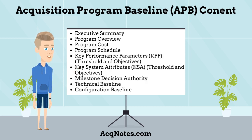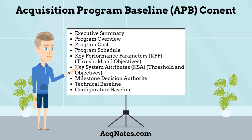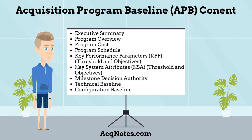What content goes into the Acquisition Program Baseline? The APB includes: an Executive Summary, Program Overview, Program Cost, Program Schedule, Key Performance Parameters with Threshold and Objectives, Key System Attributes with Threshold and Objectives, and Milestone Decision Authority Approval for Entry into the Engineering, Manufacturing, and Development Phase.